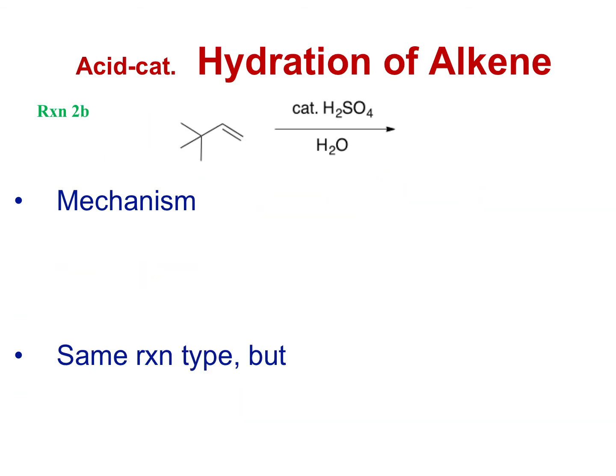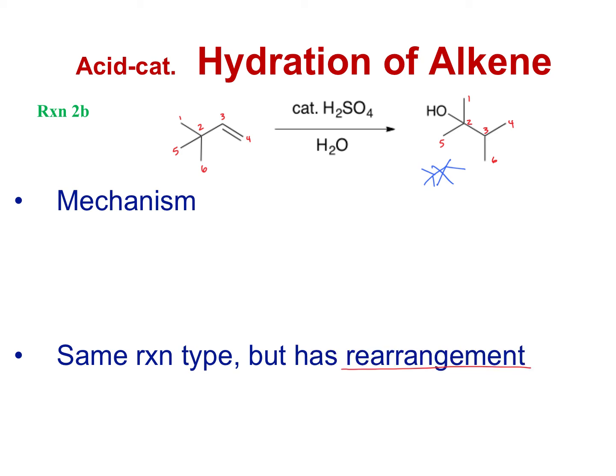Here we have another example of an acid-catalyzed hydration. For this one, what would our product look like? We're actually going to get a slightly different product — the carbons have moved around, which means we have a rearrangement. I just wanted to show an example of a reaction with rearrangement, so let's go through the mechanism to make sure we're clear.